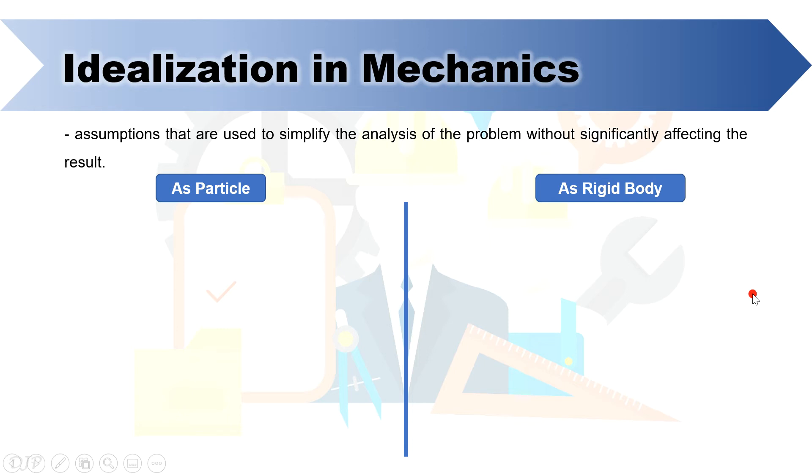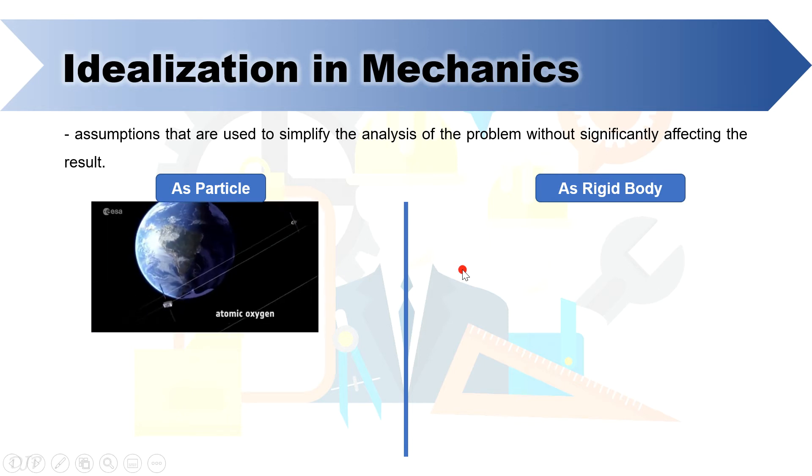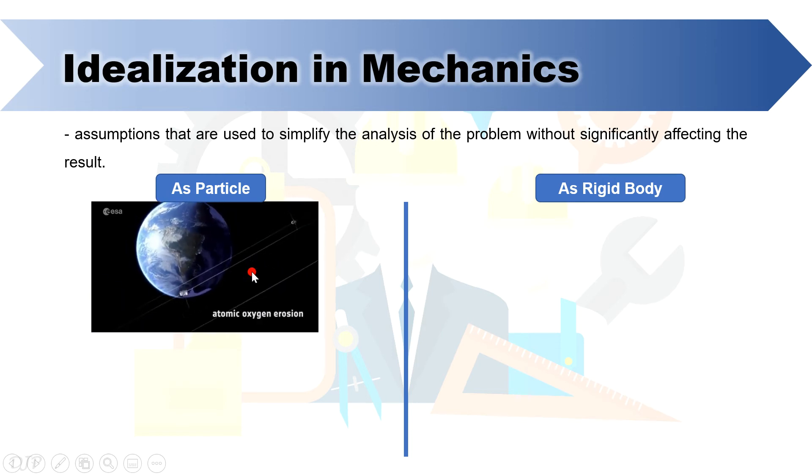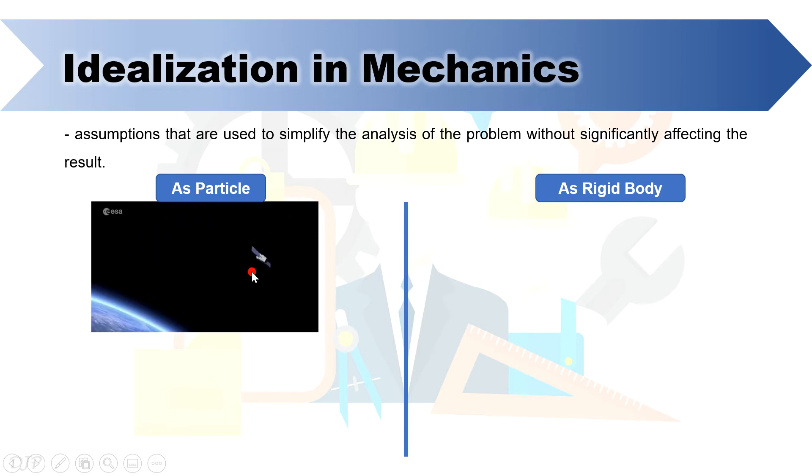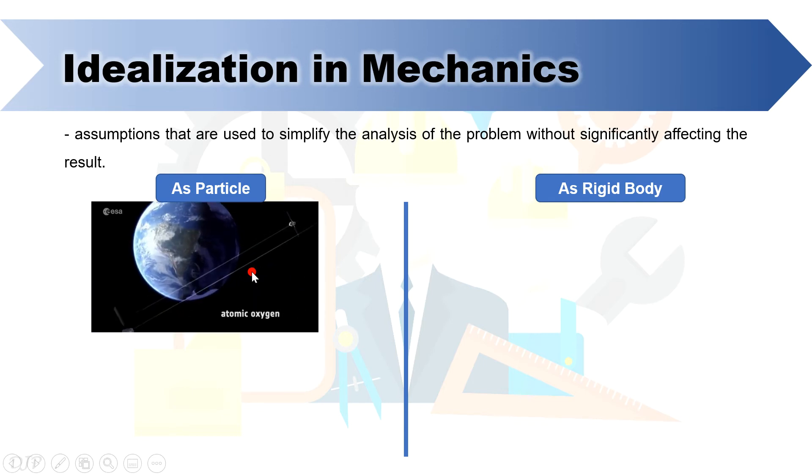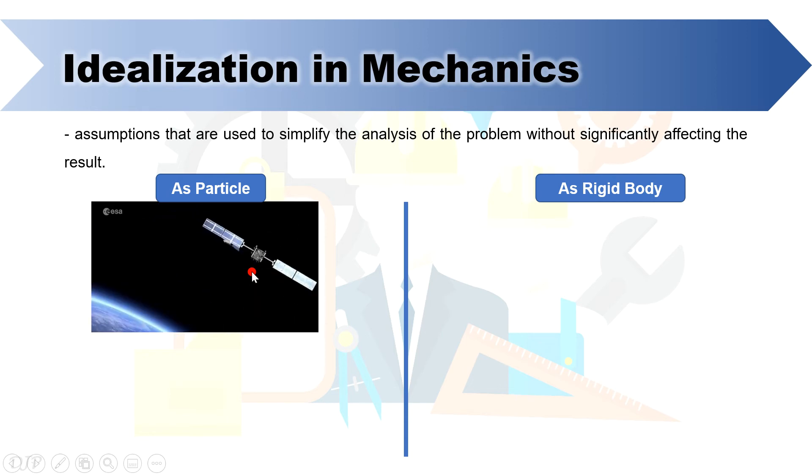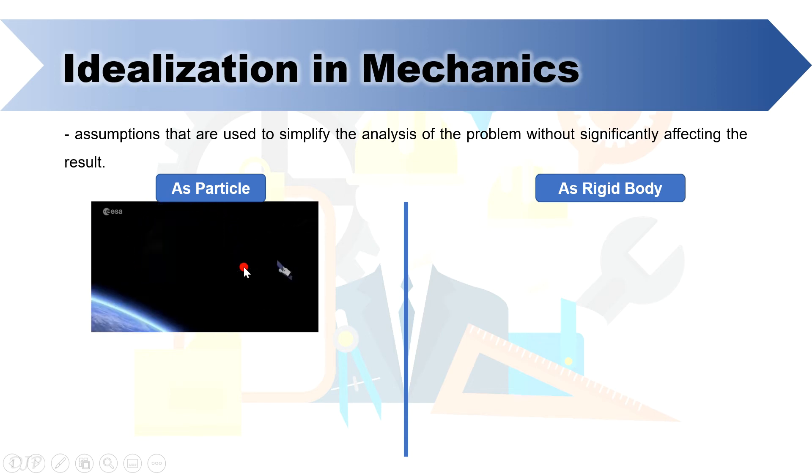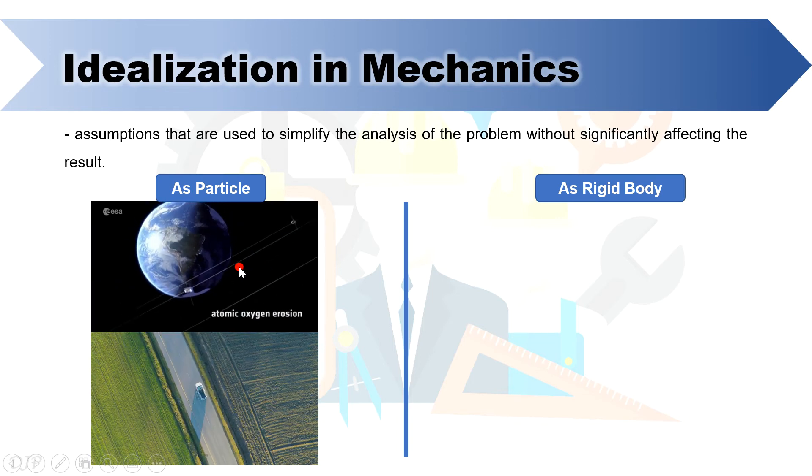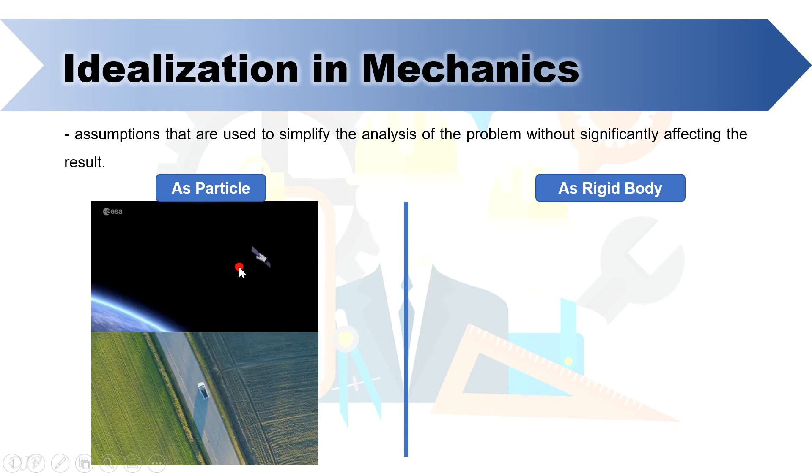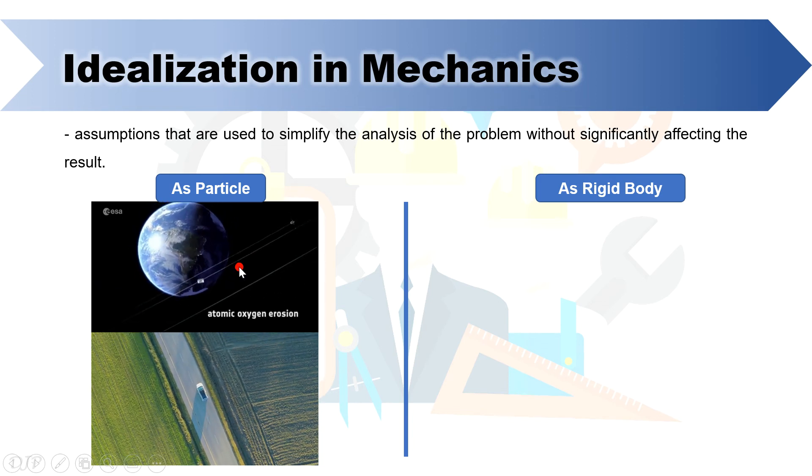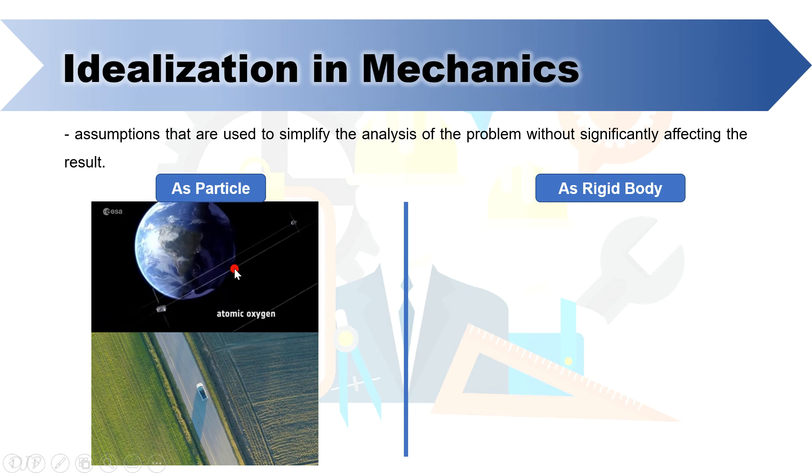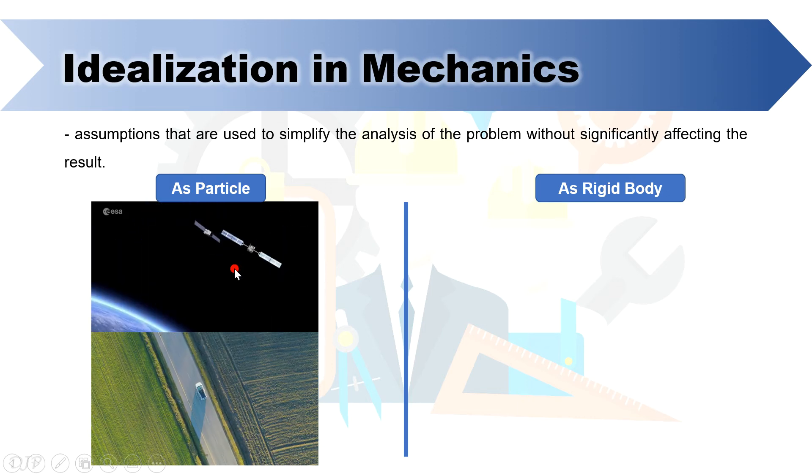Considering a particle can be relative. Let's consider or let's focus on this example. In here the satellite can be analyzed as particle to investigate its motion because relatively the size of the satellite is negligible compared to our planet. Another example is vehicle traveling from one point to another. Here the vehicle can be analyzed as particle if the distance that it will travel is too large compared to its size.